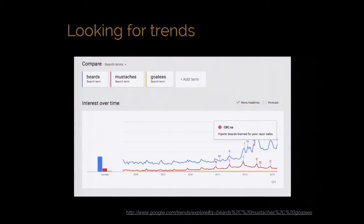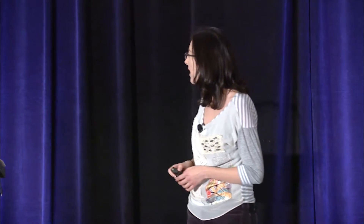If you've never played with Google Trends, it's a fantastic way to burn an hour of your life. Google Trends lets you look at people's search behavior and how it changes over time. In this example, I'm comparing changes between beards, mustaches, and goatees — and the top blue line is beards, so you know it's winning. Google conveniently adds little articles to various peaks and valleys to highlight important things. At one point, hipster beards were being blamed for poor razor sales. With this very basic technique of counting over time, we can see some potentially really interesting changes.